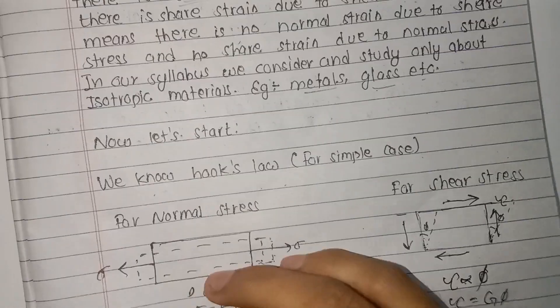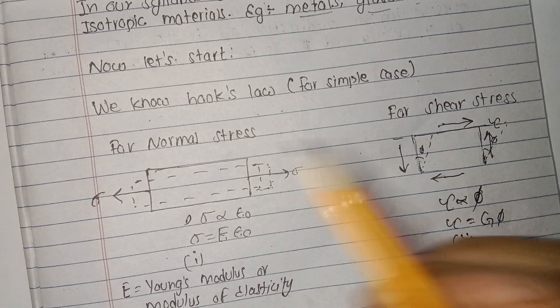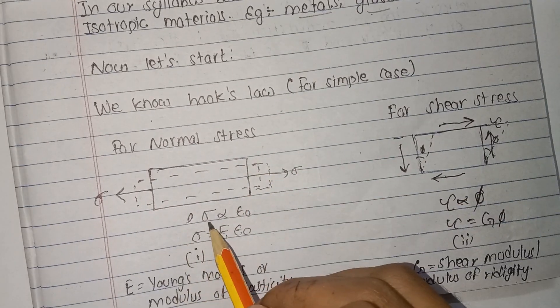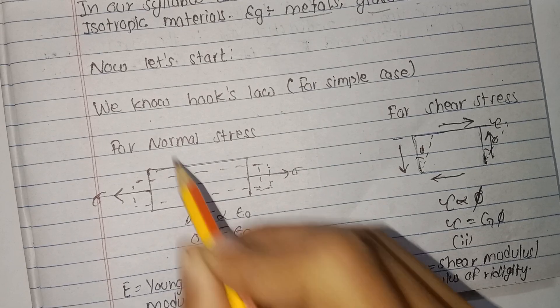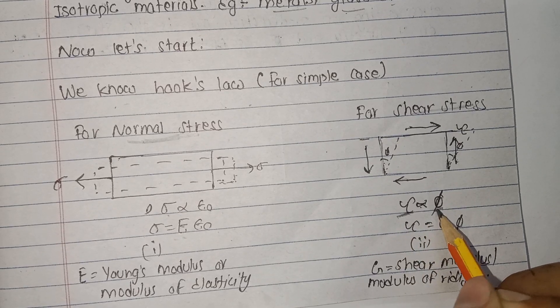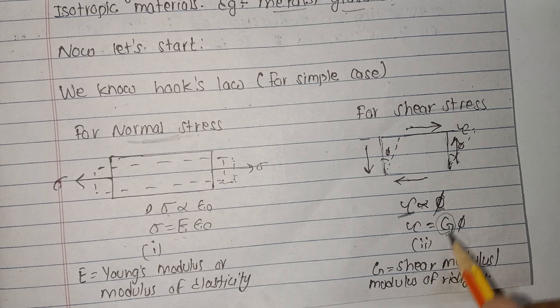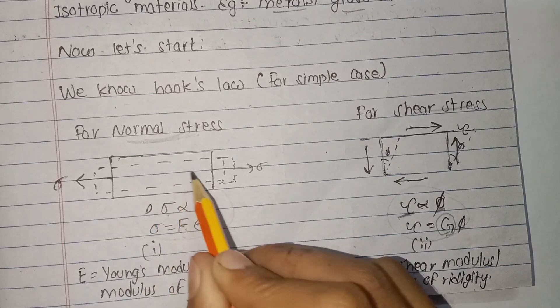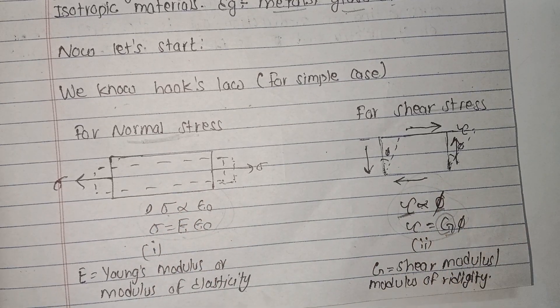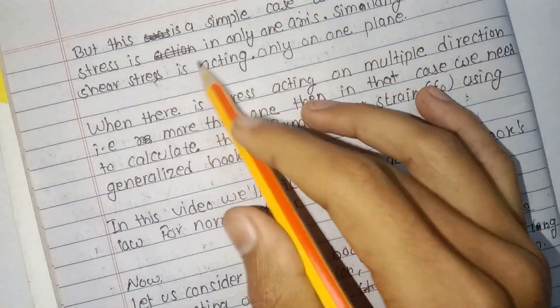Now let's understand Hooke's Law. In the simple case, normal stress is directly proportional to strain. In the simple case, normal stress is only on one axis — that is the simple case where stress acts on a single axis.